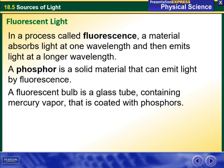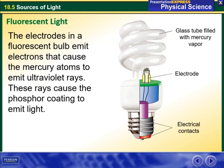A phosphor is a solid material that can emit light by fluorescence. A fluorescent bulb is a glass tube containing mercury vapor that is coated with a phosphor.